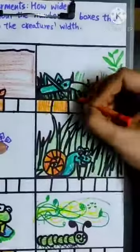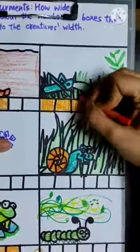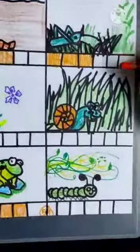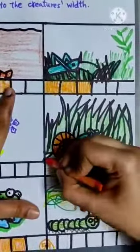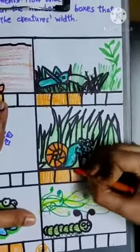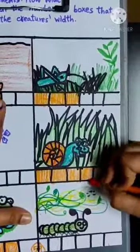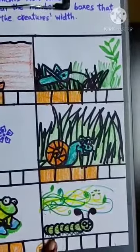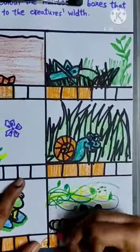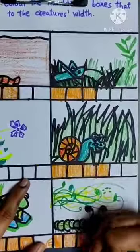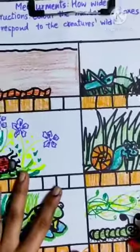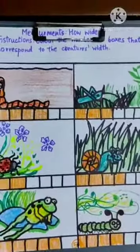Now we have a grasshopper — the grasshopper's width is three boxes. Now we have a snail — the snail's width is one, two, three, and four boxes. And the last one is a caterpillar: one, two, three, four. This page is completed, thank you.